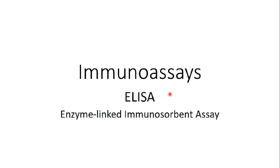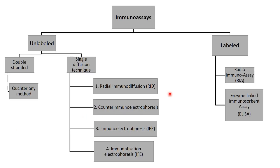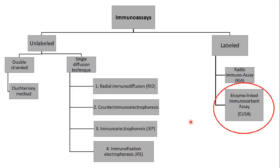Hello everyone. In this video I'm going to speak about immunoassays, and specifically about ELISA — the enzyme-linked immunosorbent assay. When I say immunoassays, there are two types: labeled and unlabeled. I'm not going to speak about unlabeled immunoassays because they are not used much anymore. Now we have two very well-known types of labeled immunoassays: ELISA and RIA (the radioimmunoassay). In this video I'm going to speak specifically about ELISA, and in the next video I'm going to mention the RIA.